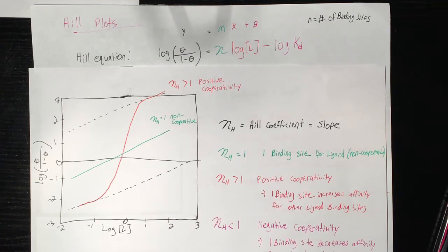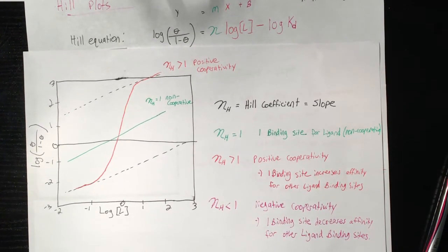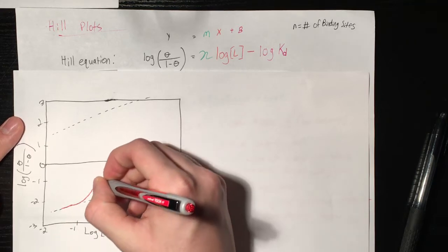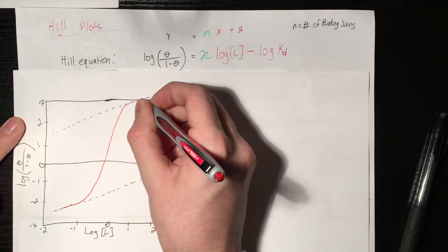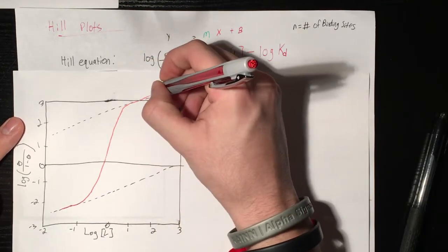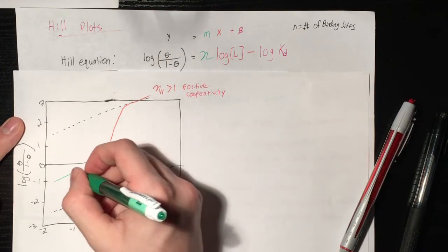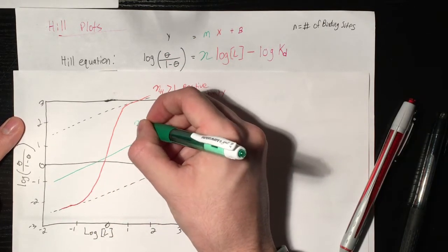And so you can trace these lines, and it'll form a sigmoidal curve like this. And so if you have a protein that only has one binding site, so it has no cooperativity of any sort, it's going to trace a straight line in the first place like this.